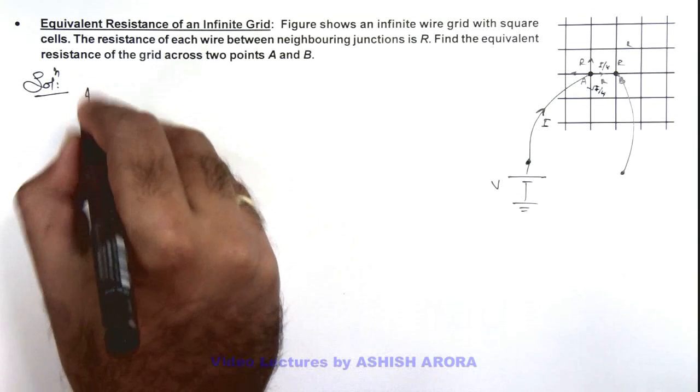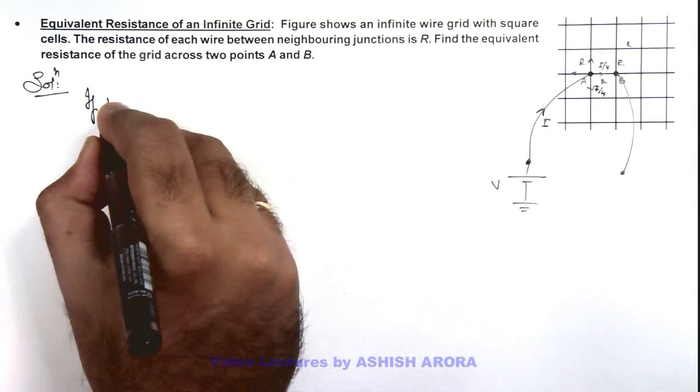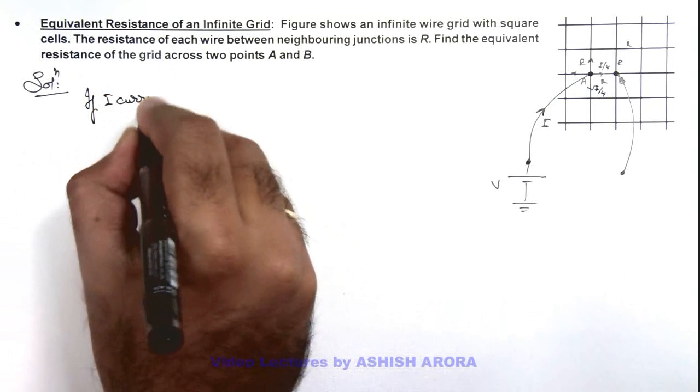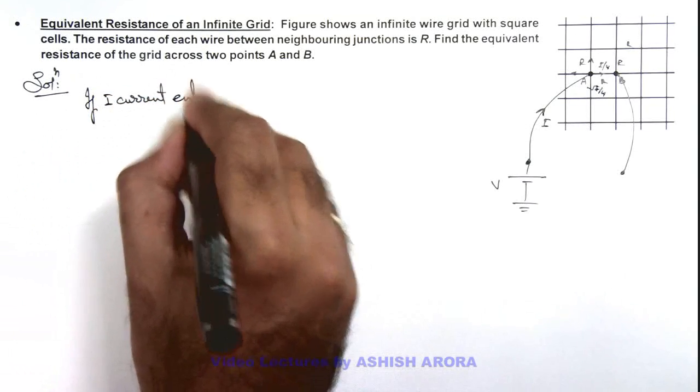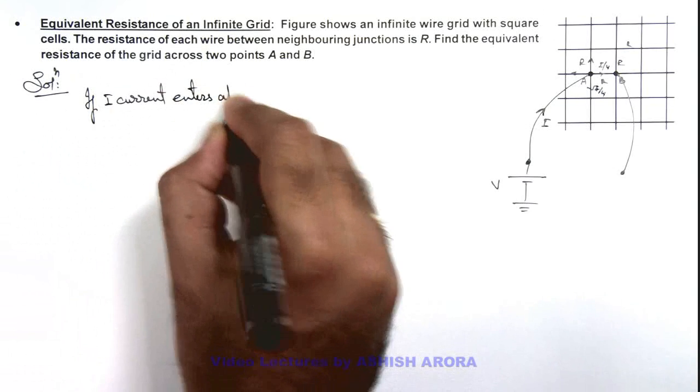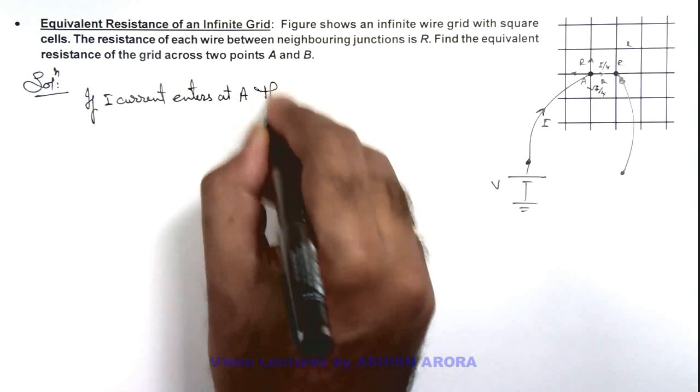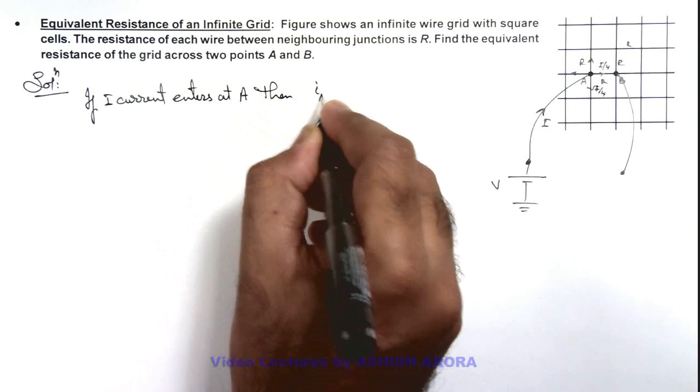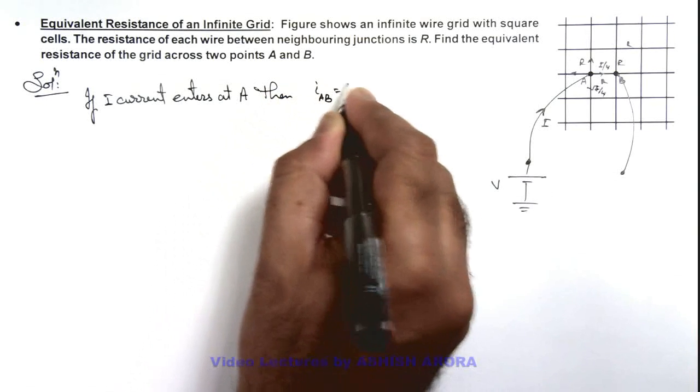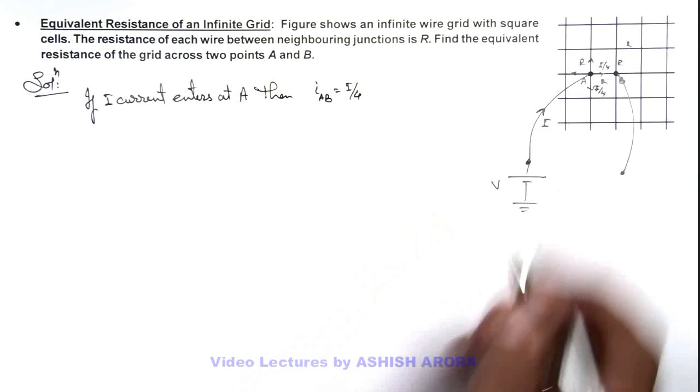So we can say here, if I current enters at A, then current flowing through the branch AB will be I by 4. This is by symmetry if B is kept open.